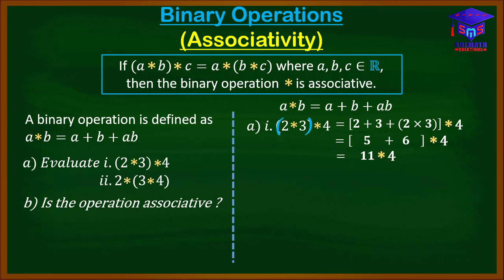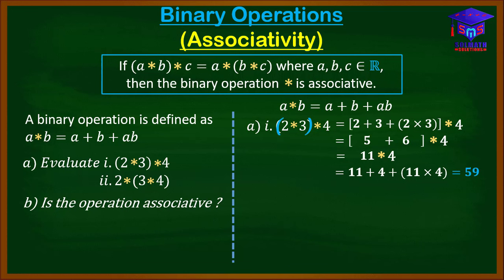We use the defined operation again with A=11 and B=4, so we have 11+4+(11×4) = 11+4+44 = 59. So (2★3)★4 = 59.